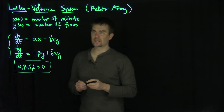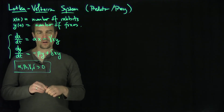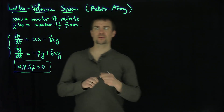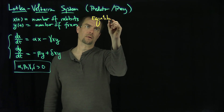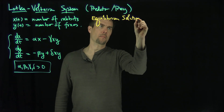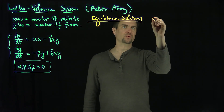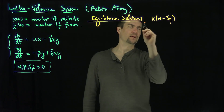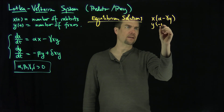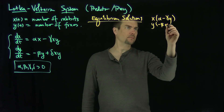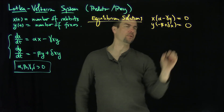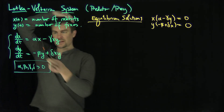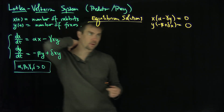Let's analyze this. We can clearly see that if we want to find the critical points, the origin is a critical point. Can we find any other critical points? Let's find the equilibrium solutions. We set both equations equal to zero. The first equation factors as x times (alpha minus gamma y) and y times (negative beta plus delta x). Clearly, (0, 0) is an equilibrium — and that equilibrium is going to be a saddle, since those terms have opposite parities.